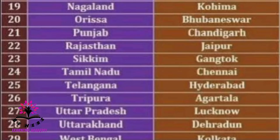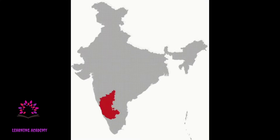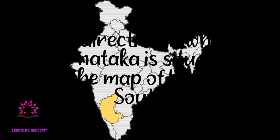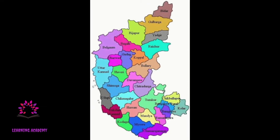Now, where is Karnataka located on the map of India? Karnataka is situated in the south direction. Karnataka is our state, and you know that there are 30 districts in our state. Now, each state has special physical features — for example, some will be covered by hills, some are coastal areas, and so on.